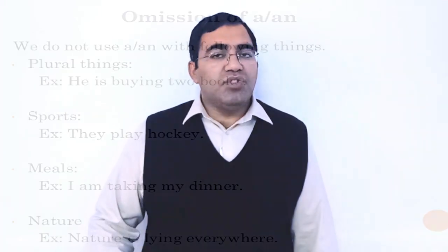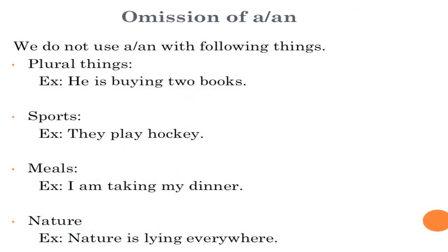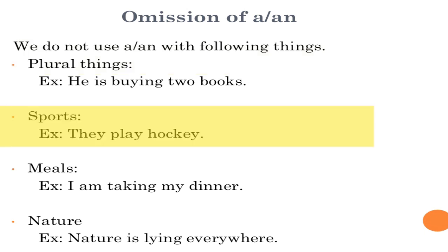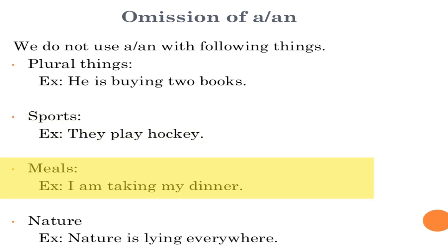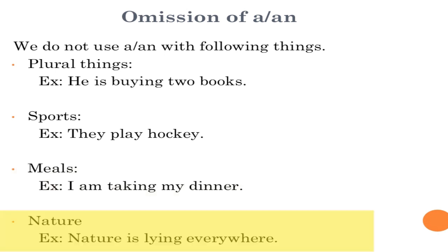Now omission — where we should NOT use 'a' or 'an'. Rule one: with plural nouns, when there are two or more things, we do not use 'a' or 'an'. Rule two: with sports — 'he is playing cricket', 'he is playing football' — we do not use 'a' or 'an'. Rule three: with meals — 'I am taking breakfast', 'I am taking lunch', 'I am taking supper' — no 'a' or 'an'. Rule four: with nature — 'nature is beautiful', 'nature is everywhere' — no 'a' or 'an'.